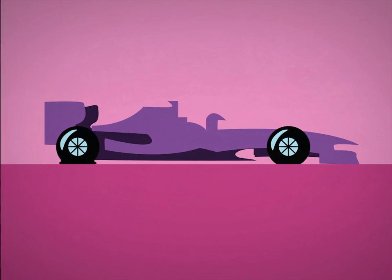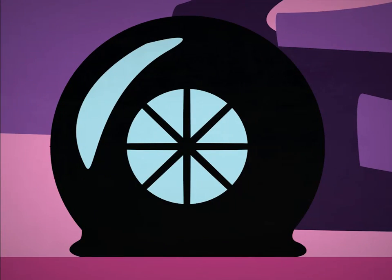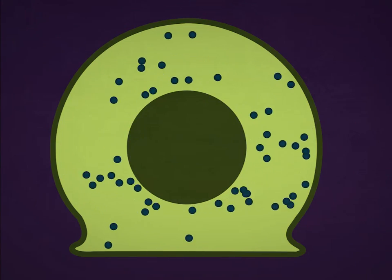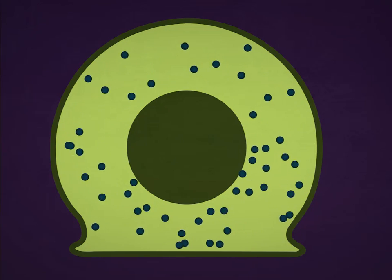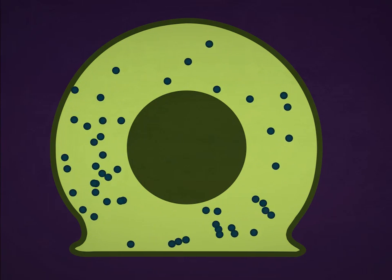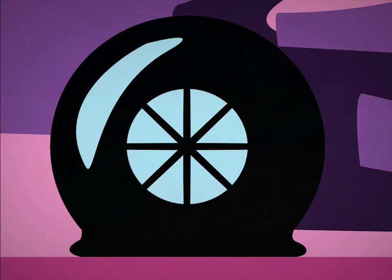When the air in a racing car's tire is cold, the gas pressure is low. The tire seems flat and a large part of it is in contact with the road. This makes the car slower.